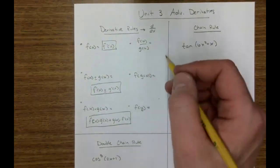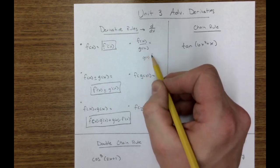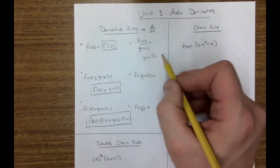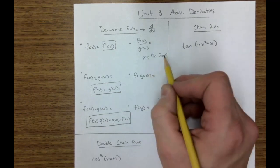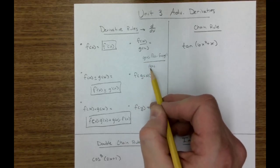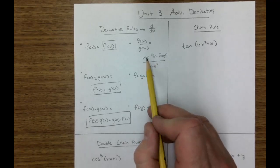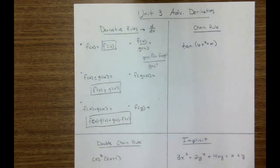When we do a quotient, we have to do low function, d high, minus high function, d low. That is g of x right there. All over g of x squared. Low, d high, minus high, d low, all over low squared.